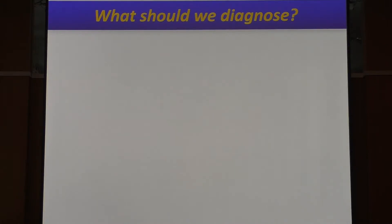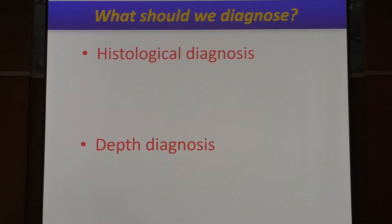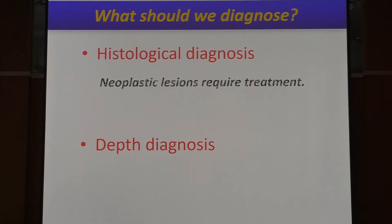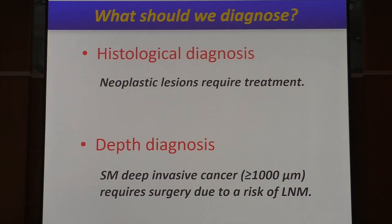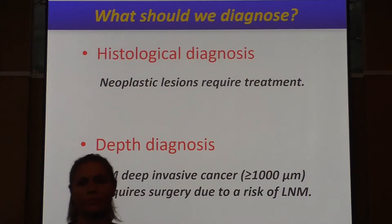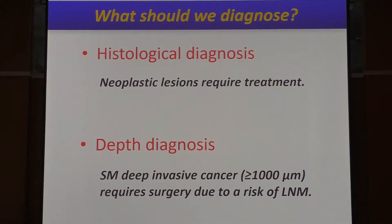What should we diagnose? There are two important points: histological diagnosis and depth diagnosis. If the lesion is a neoplastic lesion, it requires treatment. With regard to depth diagnosis, deep submucosal invasive cancer requires surgery due to lymph node metastasis risk, so differential diagnosis of deep SM invasive cancer is very important.